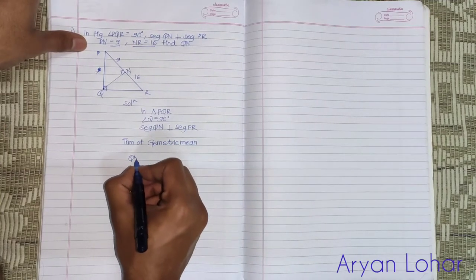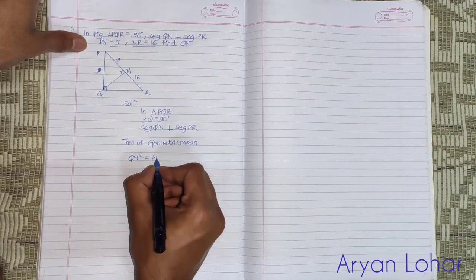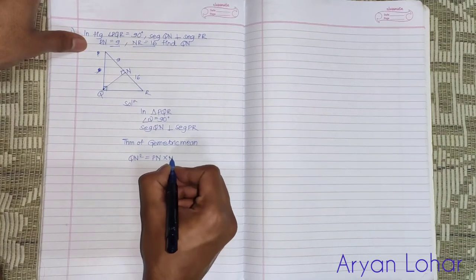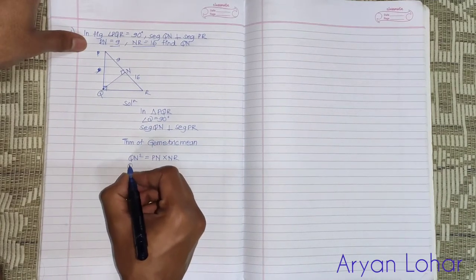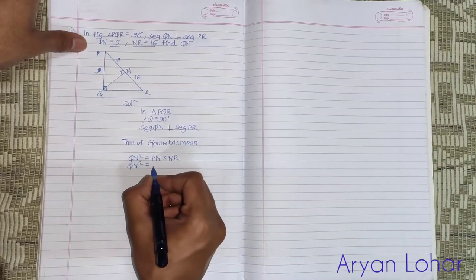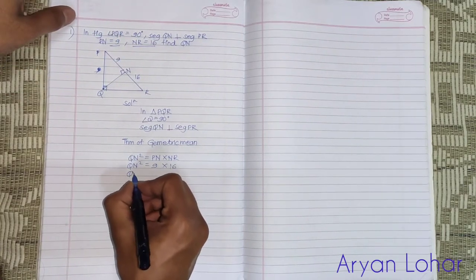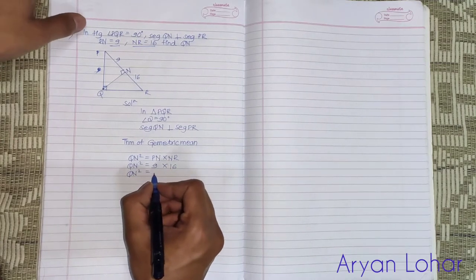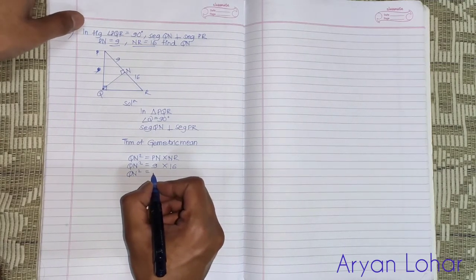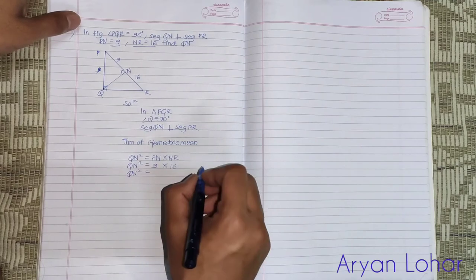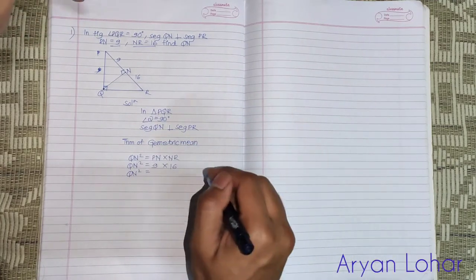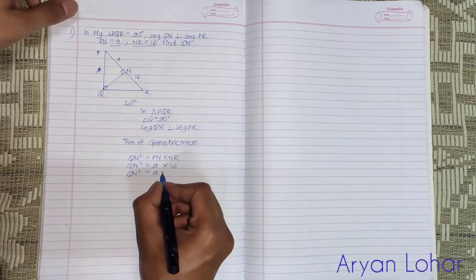QN square is equals to PN multiply by NR. QN square is equals to PN is 9 and NR is 16. QN square is equals to 9 times 16.